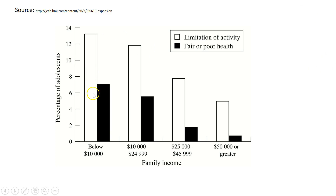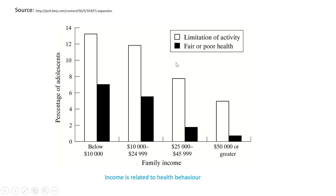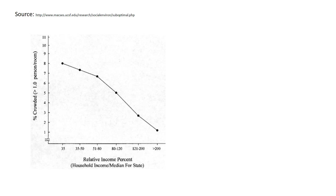Whereas the poor kids may be at home every day after school — latchkey kids we used to call them — watching TV when their parents are out working, or maybe they're eating poor quality foods. There's no denying that income is related not just to poor health, but to poor health behavior.